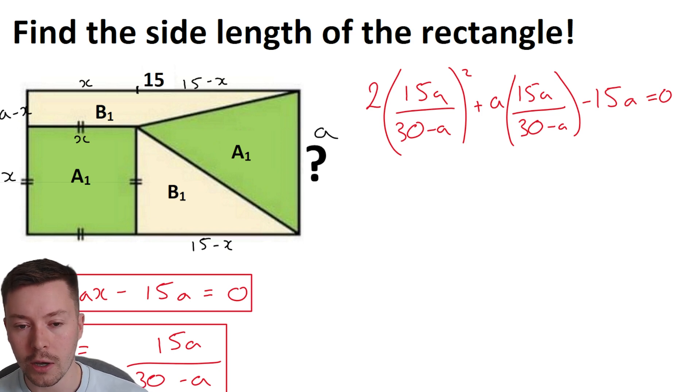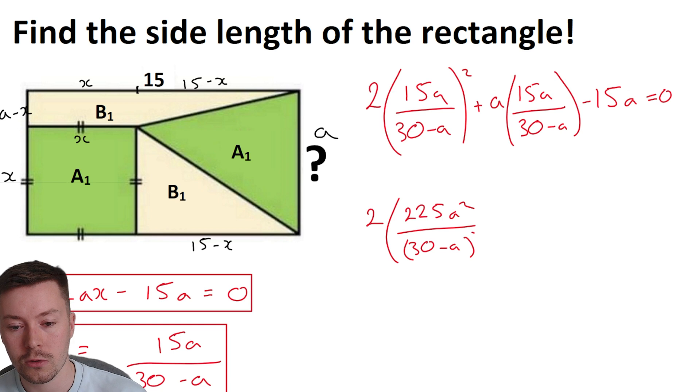Now what that is going to give us is 2 lots of 15A over 30 minus A in brackets squared. I'm going to have to keep this quite small because otherwise we'll run out of space. And then we've got A lots of 15A over 30 minus A minus 15A is equal to zero. Okay. What we're going to do is I am going to, well, I'm thinking at this point that these numerators I'm going to multiply by. Okay. Now what I'm going to do next, like I say, I'm going to square the numerators, sorry, the denominators I'm going to multiply by, square the numerators. I'm going to leave the denominators in brackets.